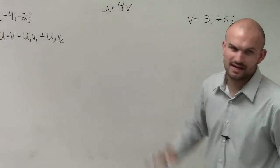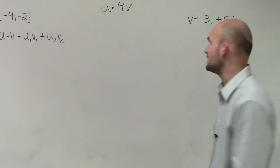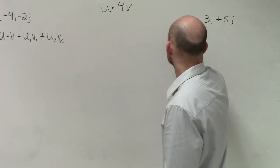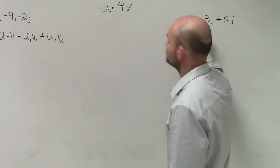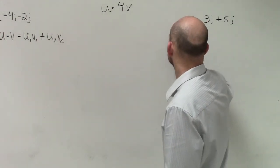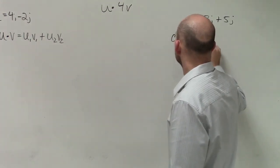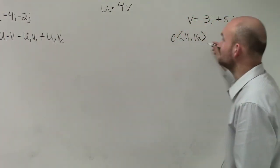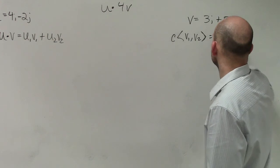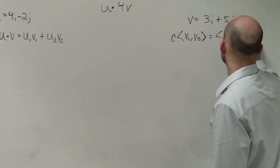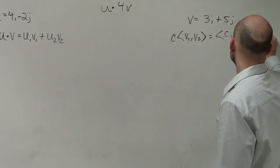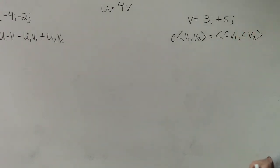Then I say a scalar. How do we do a scalar times a vector? Well, if I have a scalar c times v1 comma v2, then remember that scalar gets multiplied to both of our terms. So it becomes cv1 comma cv2. You multiply your scalar times both vectors. And I wrote it in component form.